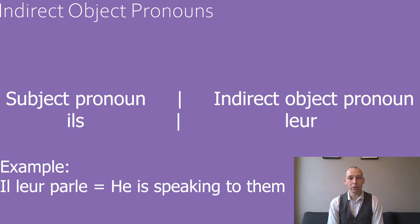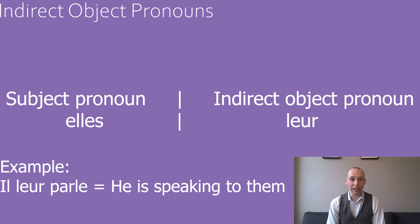The indirect object pronoun for ils is leur. Il leur parle — he is speaking to them. And finally, the indirect object pronoun for elles is also leur. Il leur parle — he is speaking to them.